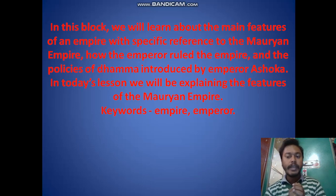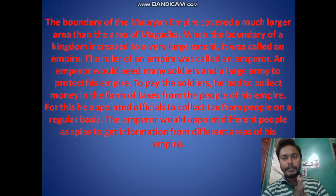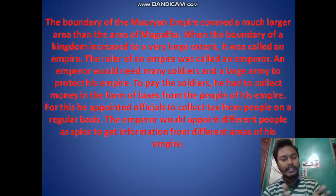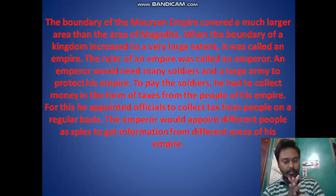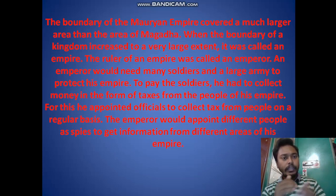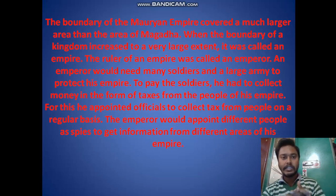The key words are Empire and Emperor. The boundary of the Mauryan Empire covered a much larger area than the area of Magadha. As we studied in the previous lesson on Janapadas and Mahajanapadas, Magadha was a big kingdom with many villages — that's called a kingdom. But an empire is when the power of a king extends from one kingdom to other parts or many kingdoms. During the Mauryan Empire, the area was much larger than Magadha, and that's why it is called an empire.